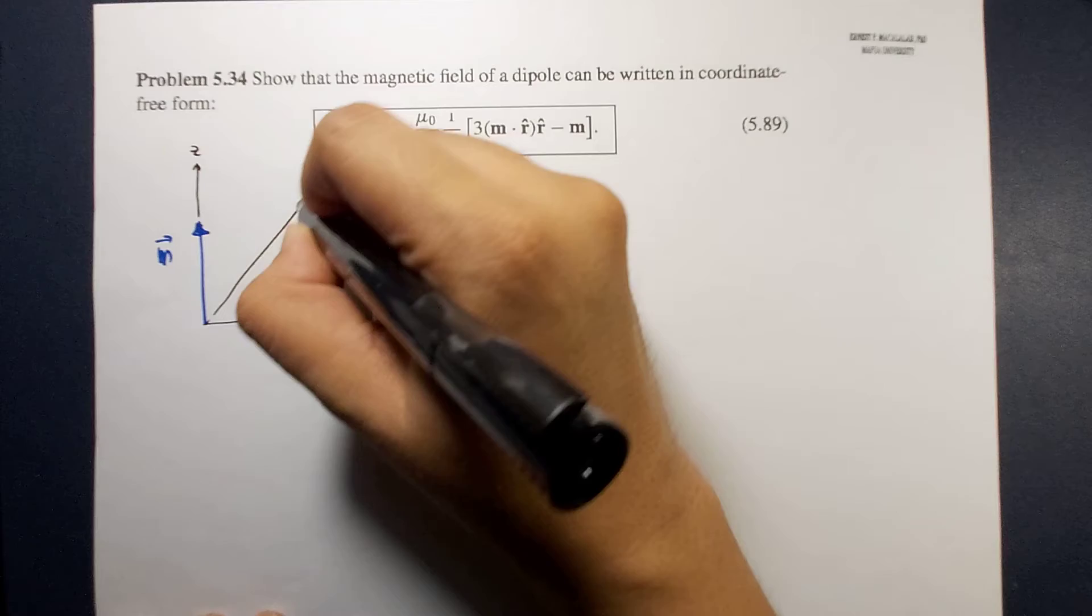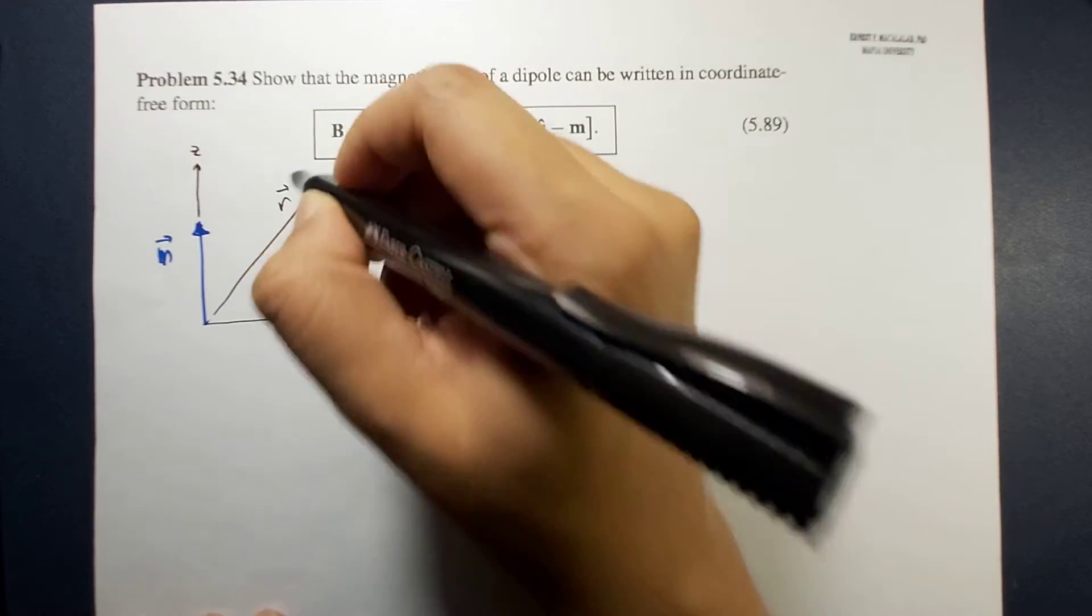this is your r vector and the position point p.